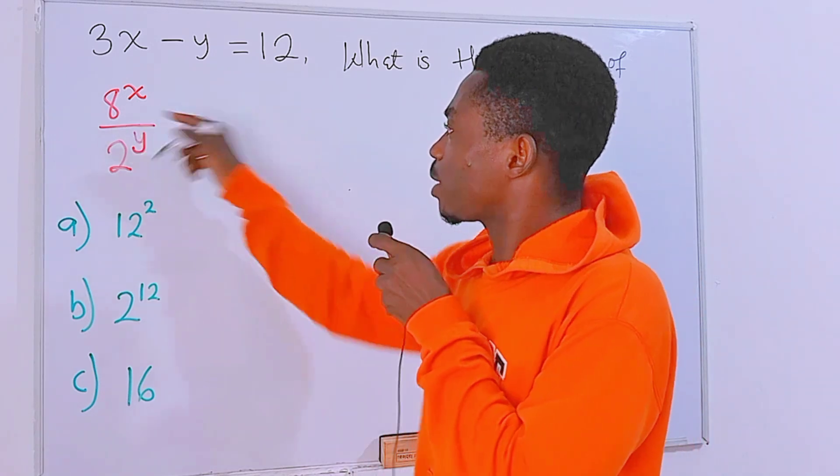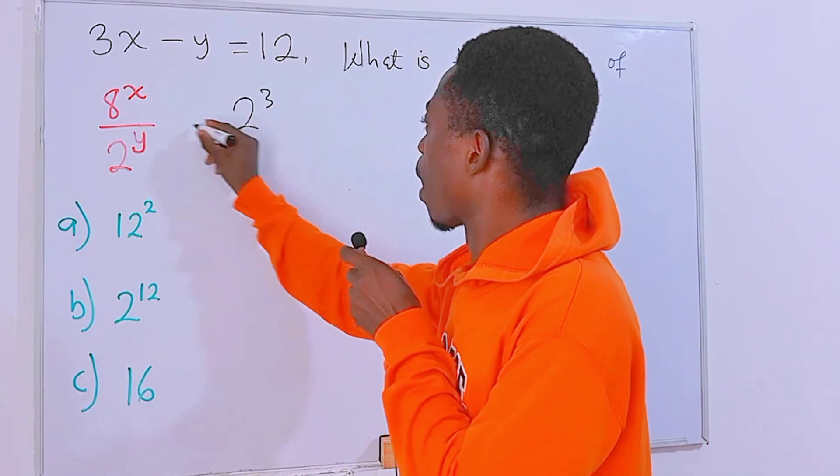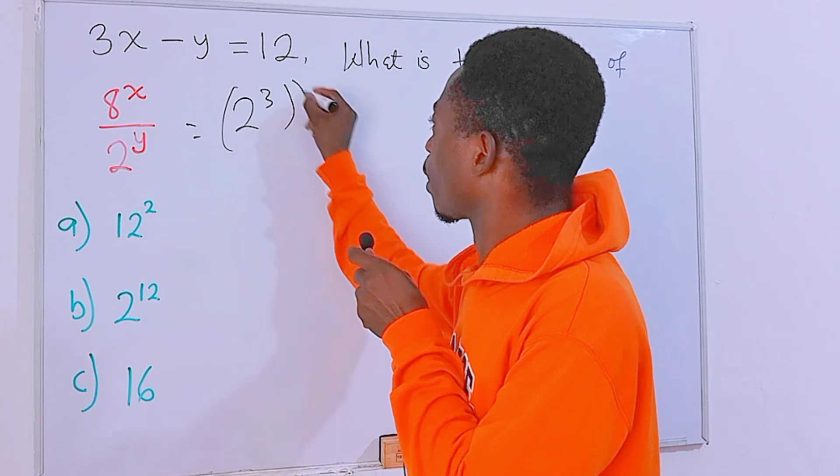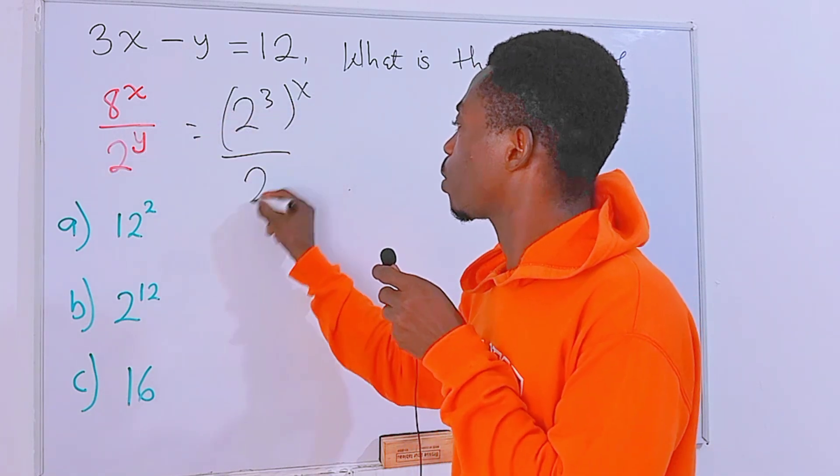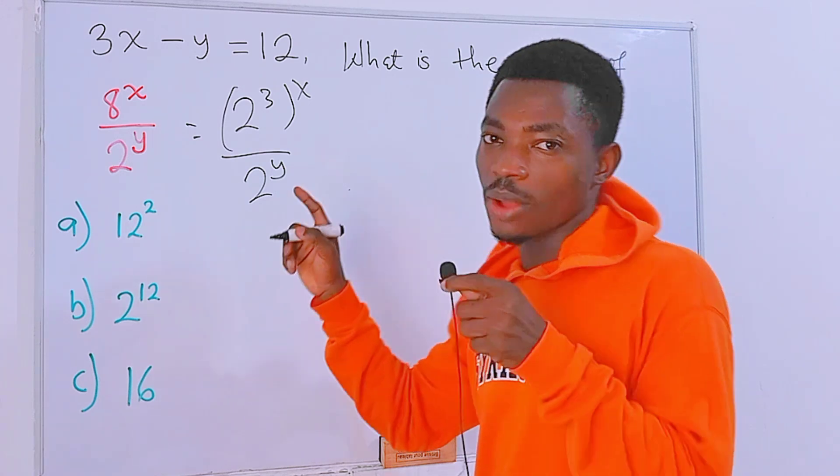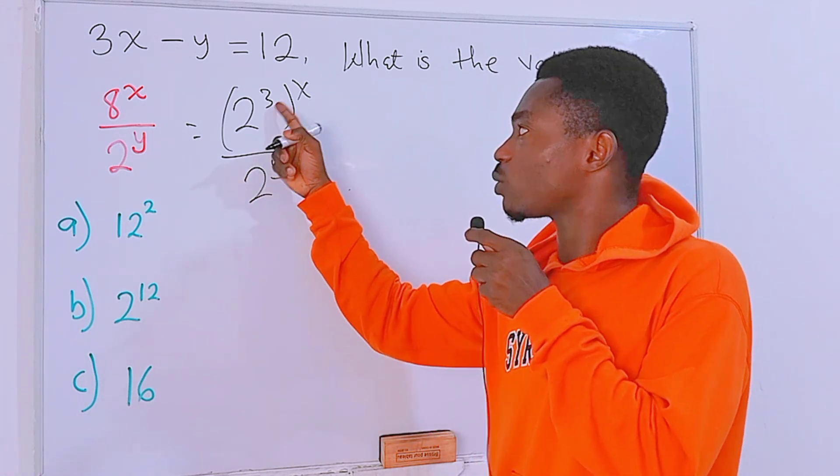Check this out. This 8 could be written as 2 to the 3rd power, then all to the power this x right here, all divided by 2 to the power y. Now we have 2 to the power 3 to the power x.